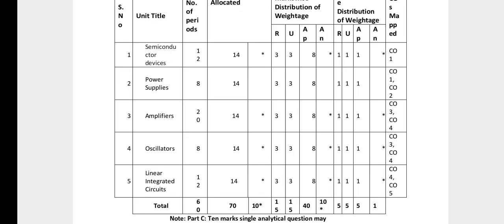From the first chapter to the fifth chapter, every chapter has 8 marks and has 2 short answer questions. The 10-mark questions are from chapters 1, 3, 4, and 5. If you choose any 4 chapters, you will have 10 marks.